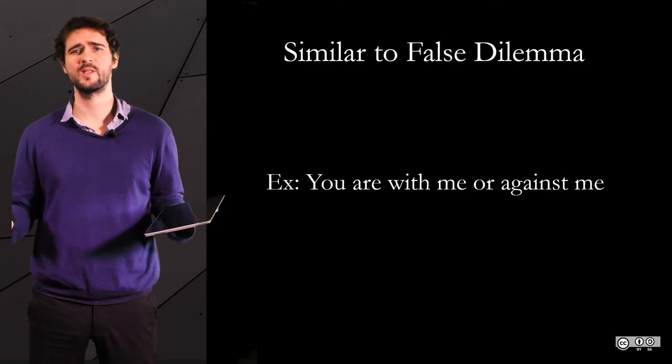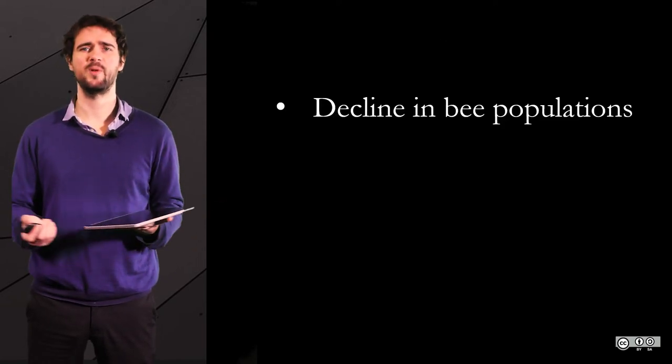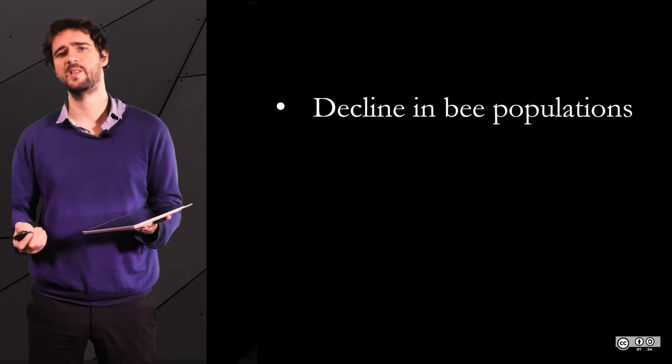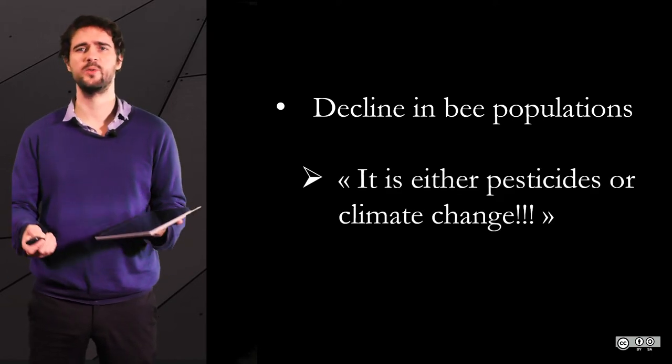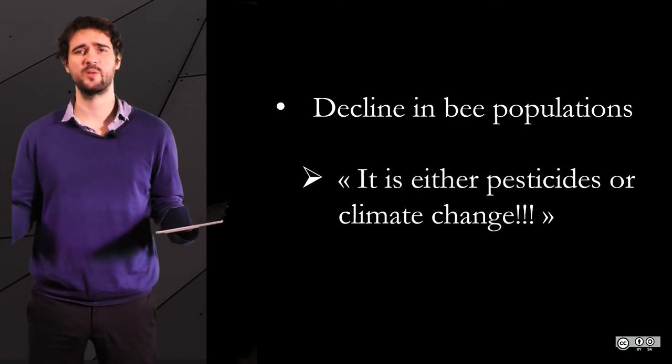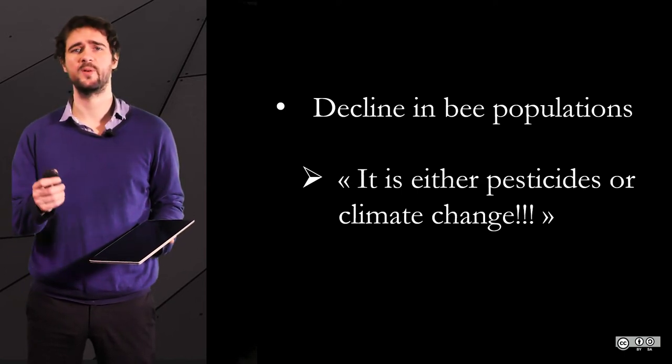If you are trying to explain, let's say, a 30% decline in bee populations, and you end up saying it is either pesticides or climate change that caused bee populations to decline, then your argument is a false dilemma.